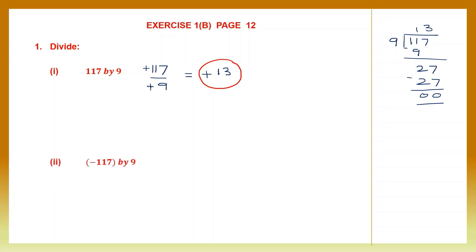Next: minus 117 divided by 9. That is negative 117 divided by 9, which is positive. When signs are different, your answer will be negative, so I put a minus sign. We divide 117 by 9 — we've already done that and got quotient 13. So our answer here is minus 13. When signs are different, you must remember to put the minus sign.